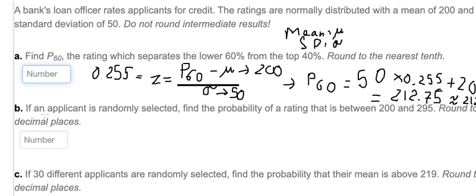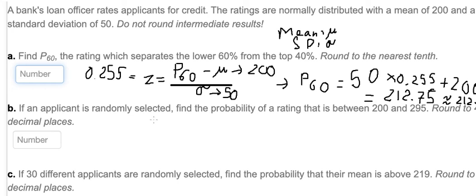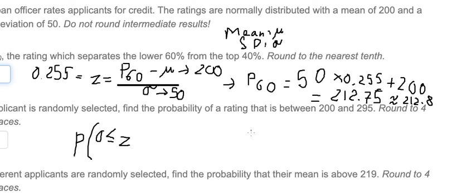Question number two: if an applicant is randomly selected, find the probability of a rating between 200 and 295, rounded to four decimal places. We know that 200 equals the mean, so we need to find P(z between 0 and the z-value for 295). We use the z-formula, putting 200 in for x, with mean 200 and sigma 50.